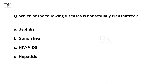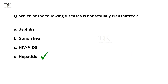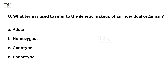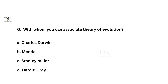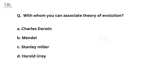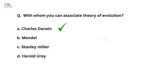Which of the following diseases is not sexually transmitted? The right answer is hepatitis. What term is used to refer to the genetic makeup of an individual organism? The right answer is genotype. With whom can you associate the theory of evolution? The right answer is Charles Darwin.